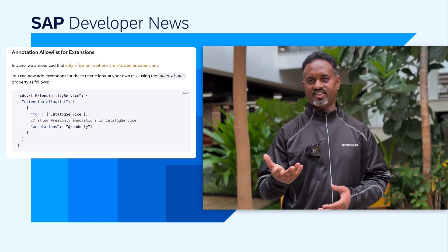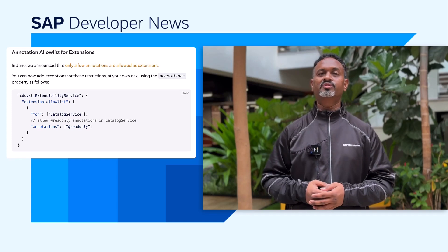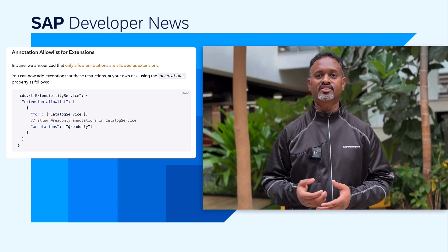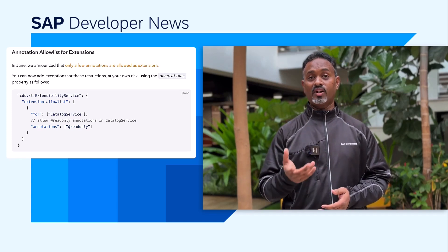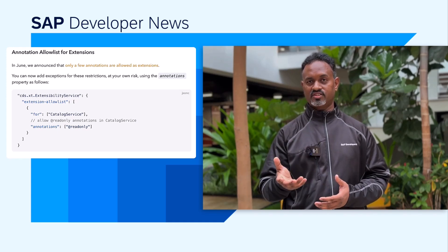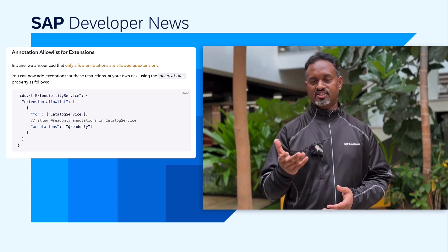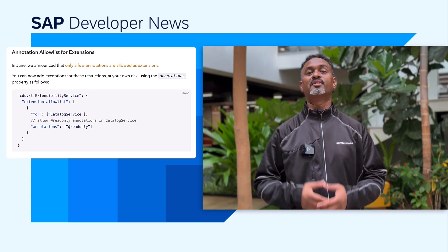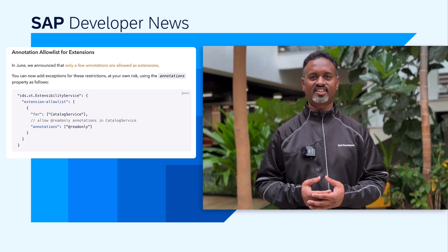Enhanced instance-based authorization is supported in CapJava with the introduction of a new configuration option reject-selected-unauthorized-entity. Regarding MTX, in the June release of CapJava it was announced that only a few annotations are allowed as extensions. You can now add exceptions for these restrictions — but at your own risk — using the annotations property. Please visit the CapJava documentation for further details; the link is in the description.